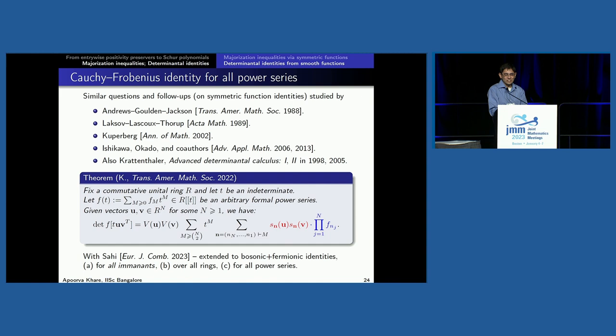The natural question to ask is: are there other immanant identities and fermionic identities for analogs of the results in other papers in this area? I haven't looked into it, but if anyone is interested, please feel free to do so. So that's that for the talk, and I should end with some references.